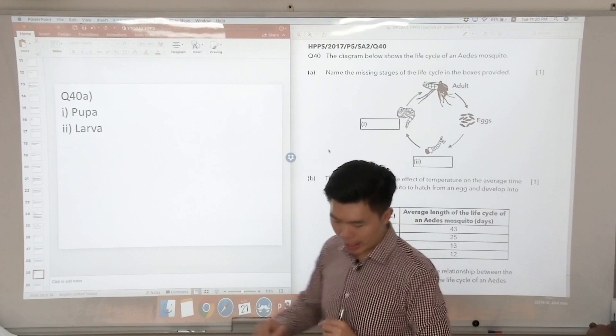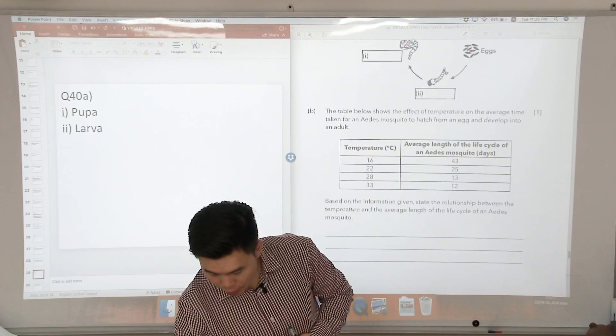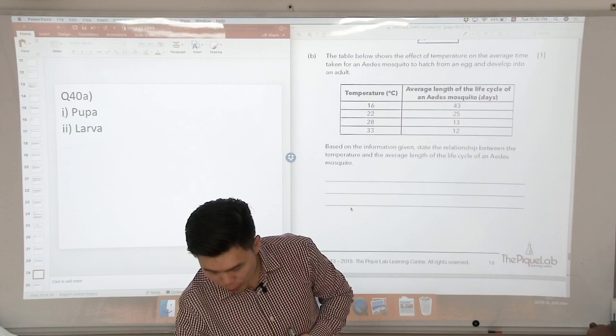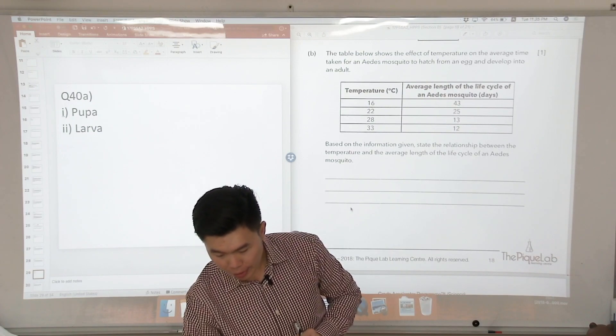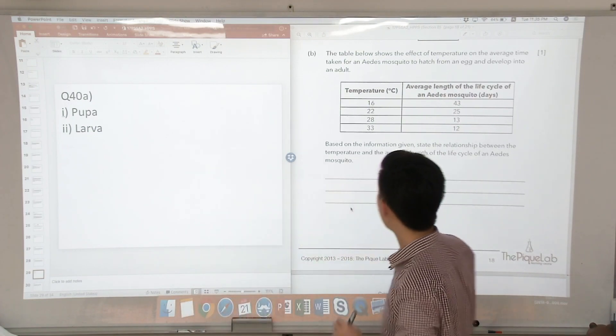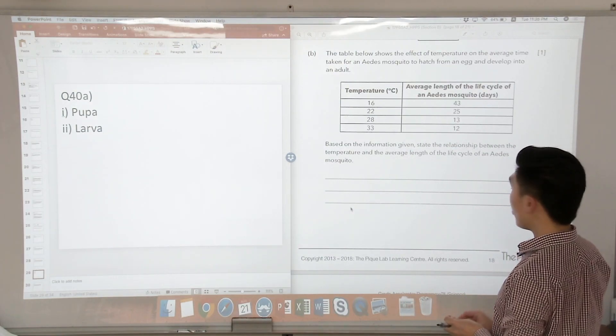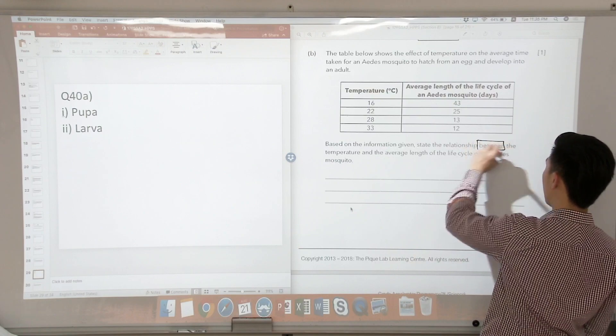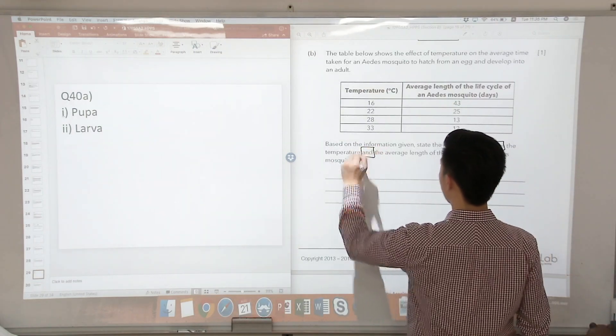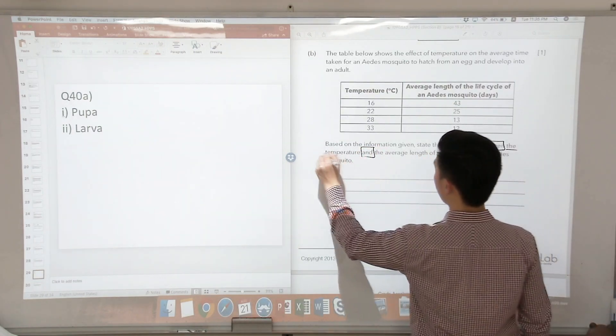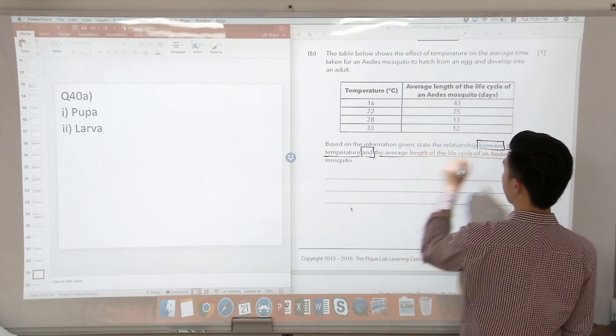Now let's look at the second part of the question. Based on the information given, state the relationship between the temperature and the average length of the life cycle of an Aedes mosquito. So whenever we answer a relationship question, we must put a box around the keywords between and and. Okay, so we underline.